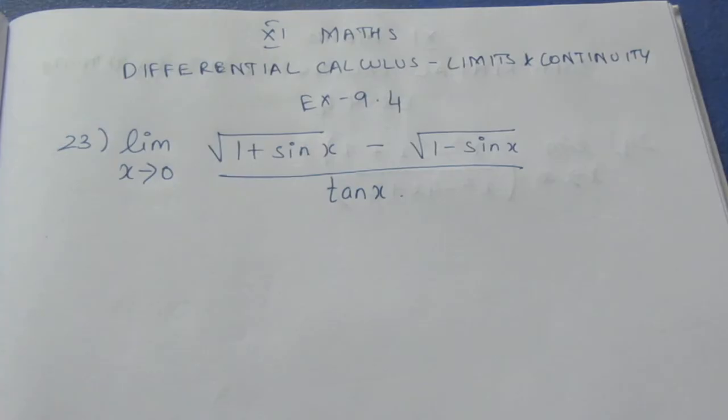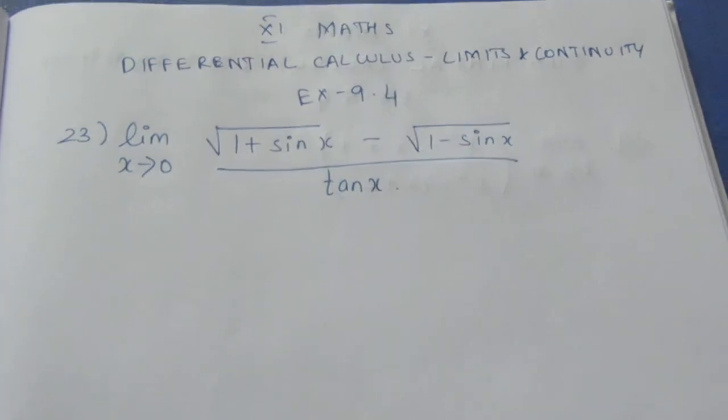Limit extends to zero. The expression is: root of (1 plus sin x) minus root of (1 minus sin x), all divided by tan x.